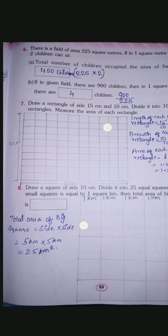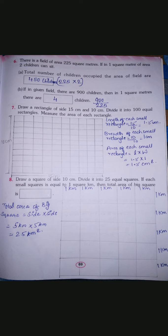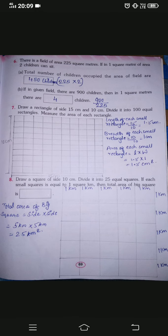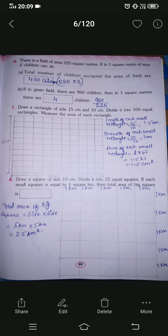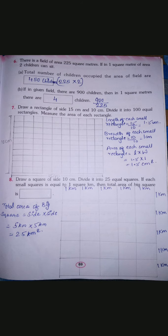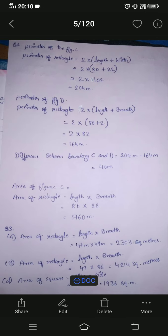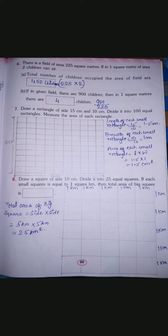It is very easy. I have solved it here on the right-hand side. Length of each small rectangle: the big rectangle is 15 centimeter long, and 10 rectangles are made inside the 15 centimeter length. So we do 15 divided by 10. As I have already taught you how to do decimals, the answer is 1.5 centimeter for the length of each small rectangle.